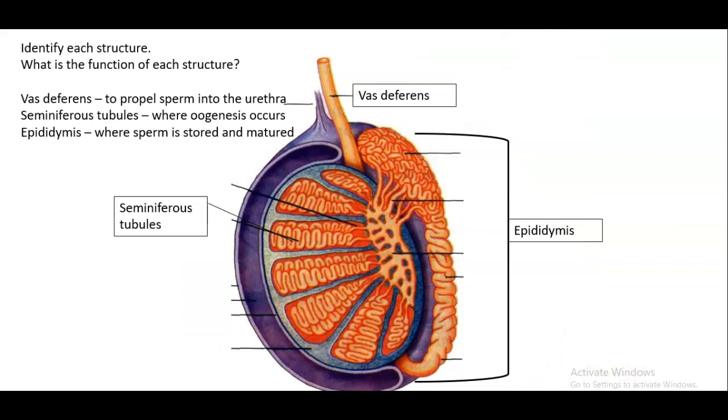Okay, and here we go. We have a testicle. Identify each structure and what is the function of each structure. So we've got the vas deferens, which is the, actually let's start here. So we have the seminiferous tubules, which is the location of spermatogenesis in the male. So that is where sperm is created. And then it makes its way down through the rete testes into the epididymis.